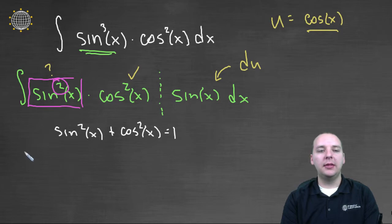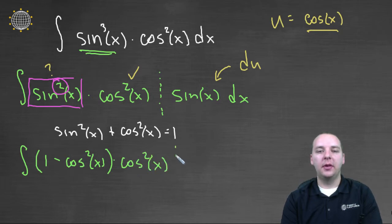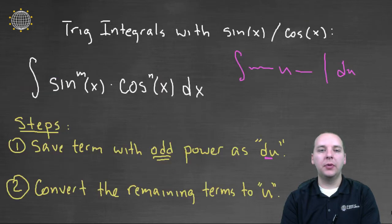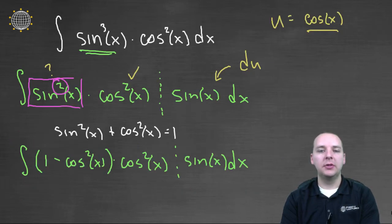And so we can rewrite this as the integral of parentheses, we'd have 1 - cos^2(x), right? We replace sin^2 with 1 - cos^2 from the trig identity. Times cos^2(x). Then at the end we have a sin(x) dx. So we've done exactly what we set out to do. We've saved the term with the odd power as the du. And now everybody who's left is in terms of u, is in terms of cosine. So this looks great.